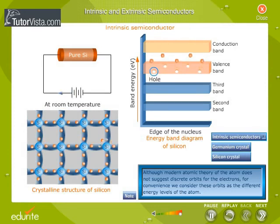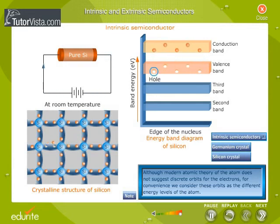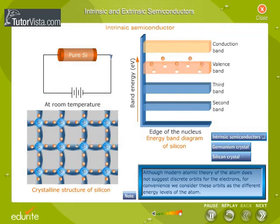Now, if a potential difference is applied across the semiconductor, current would flow through the external circuit. This type of semiconductor where the conductivity is due to the movement of electrons and holes is called the intrinsic semiconductor.